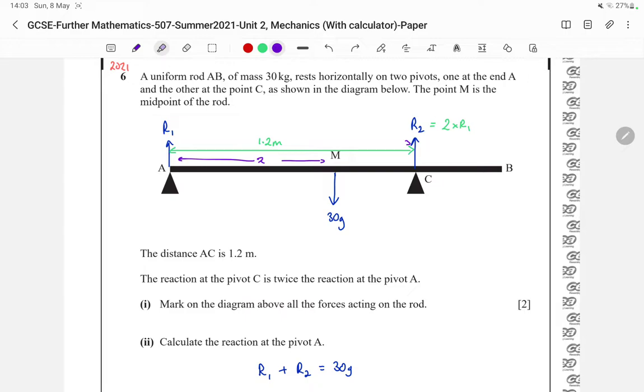The reaction at pivot C is twice the reaction at pivot A. So since I've called this R1 at A and R2 at C, since the reaction at pivot C is twice the reaction at pivot A, I can say that R2 is twice R1. The diagram has to have all the forces for two marks, so our forces are our weight acting downwards, our reactions acting upwards, that's for the two marks.